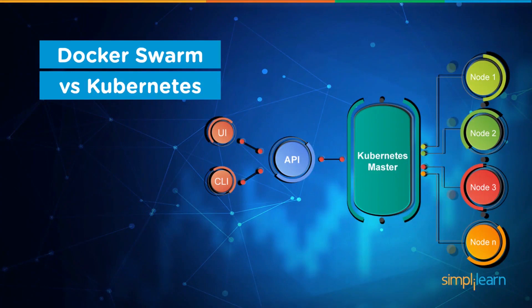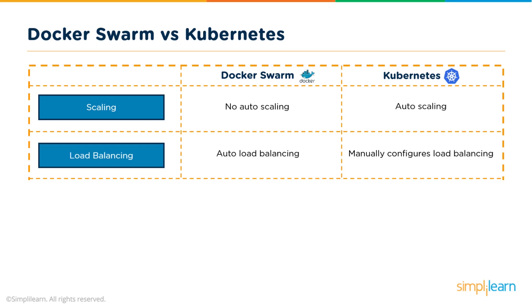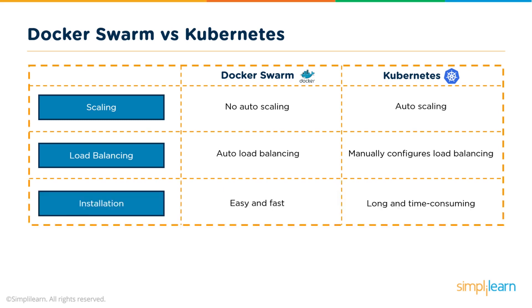Let's look at a competing product to Kubernetes, which is Docker Swarm. Docker containers, which are extremely popular, are built by the company Docker and made open source. Docker also has other products, one of which is Docker Swarm — a tool that allows you to manage multiple containers. Looking at the benefits of Docker Swarm versus Kubernetes: both tools have strengths and weaknesses. Kubernetes was designed from the ground up to be auto-scaling, whereas Docker Swarm isn't. The load balancing is automatic on Docker Swarm, whereas with Kubernetes you have to manually configure load balancing across your nodes.